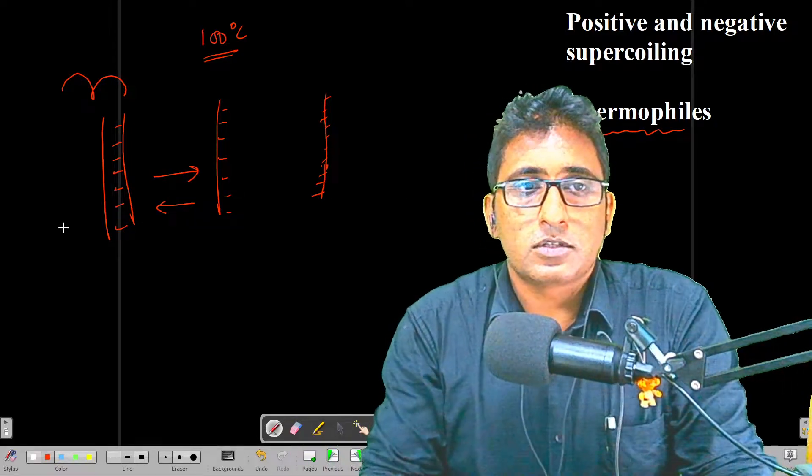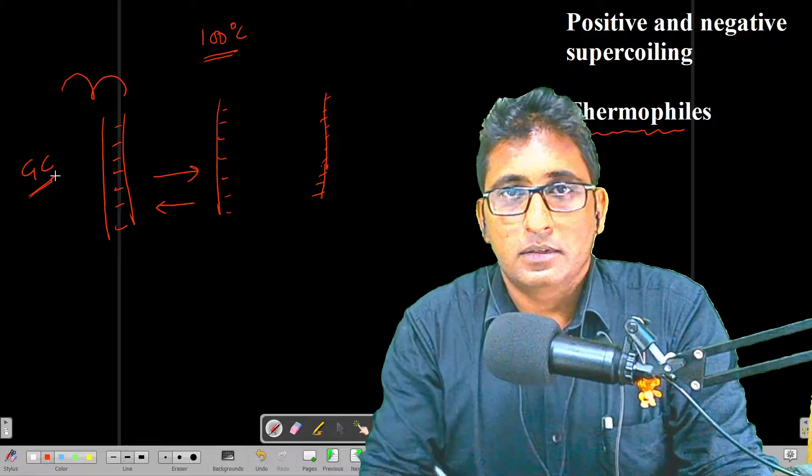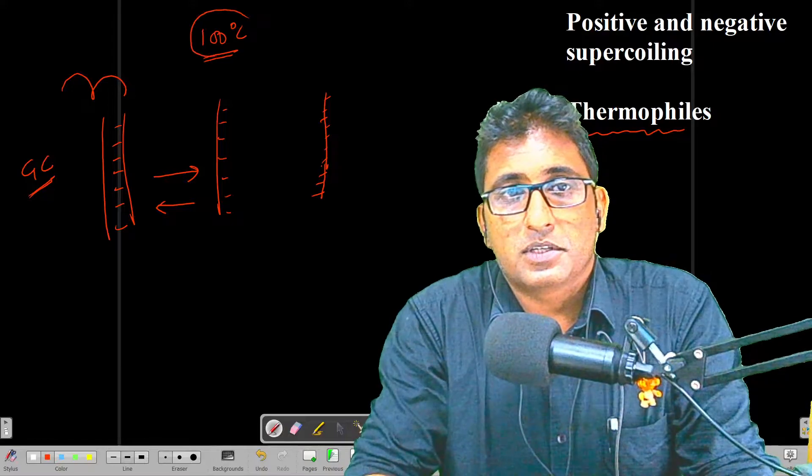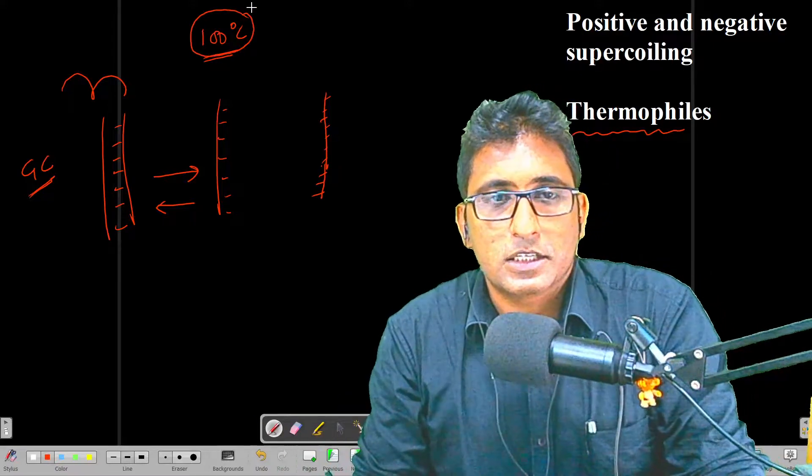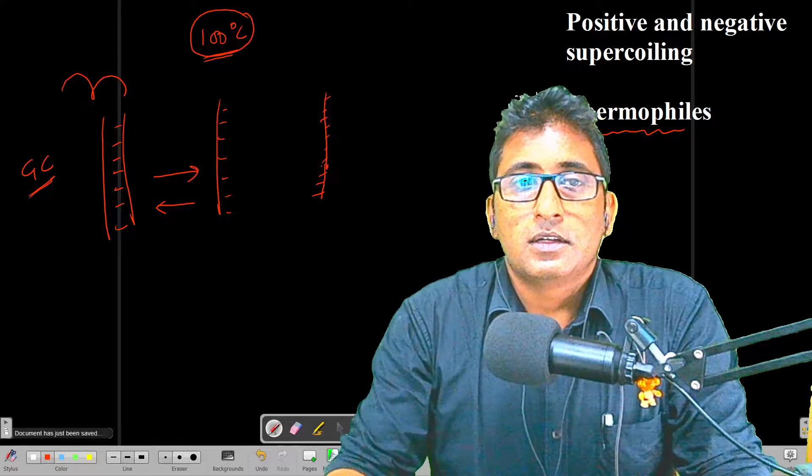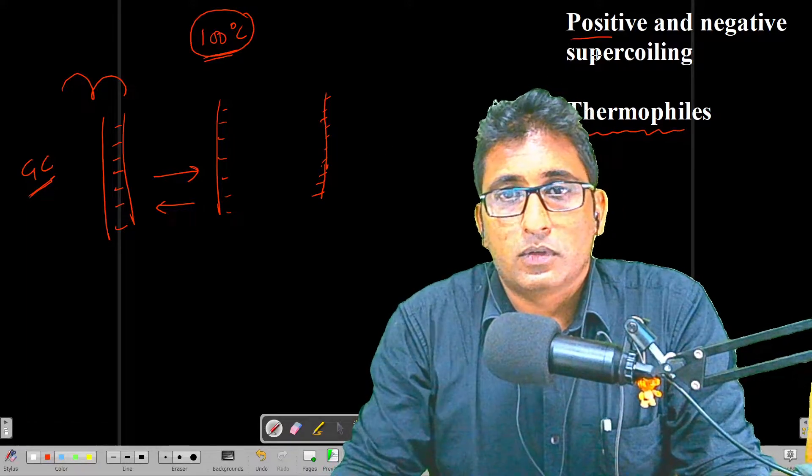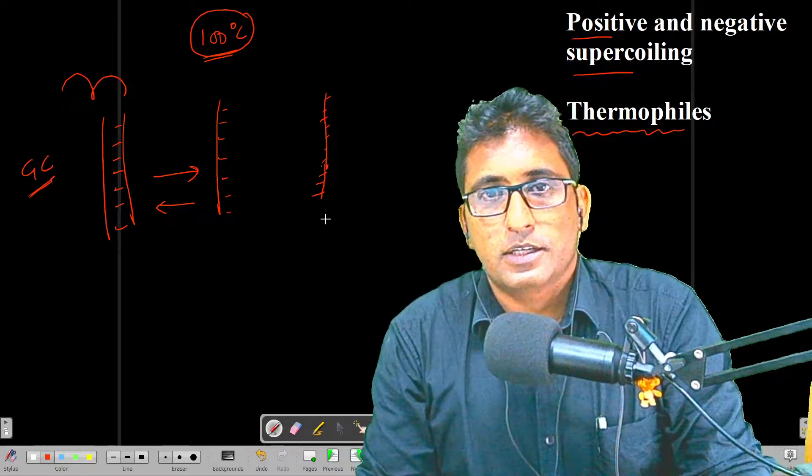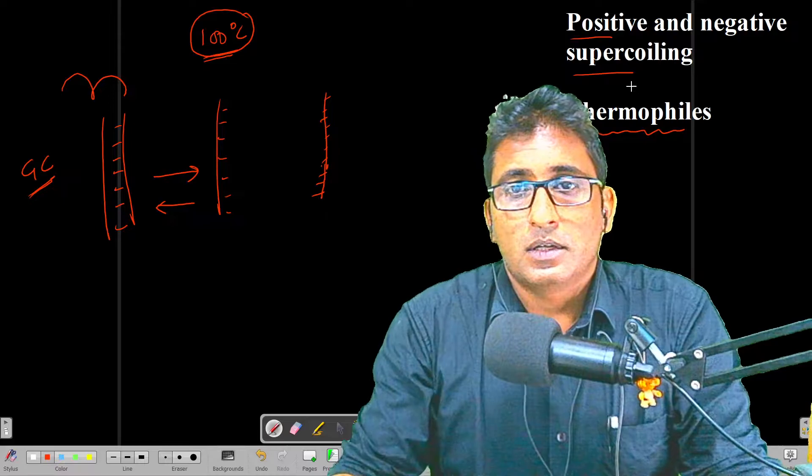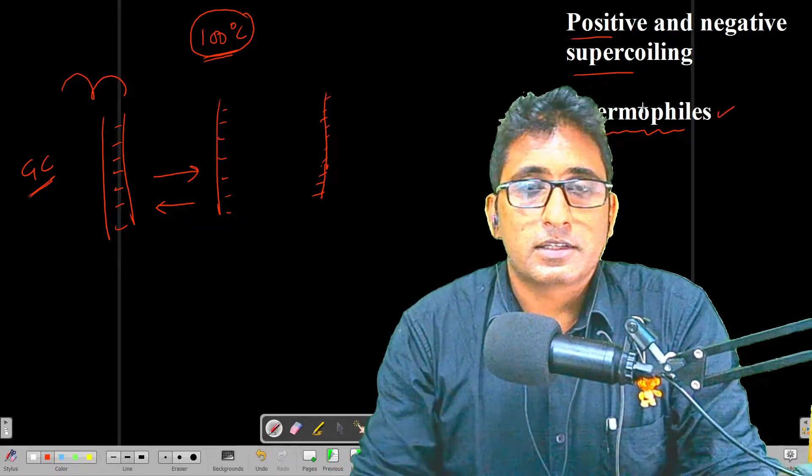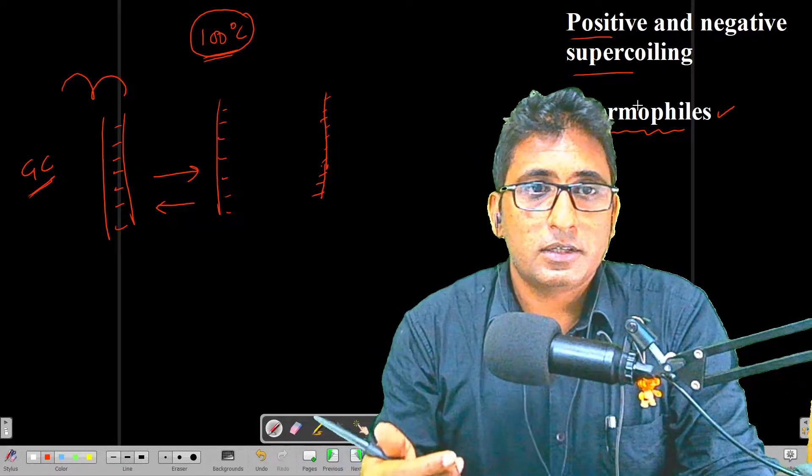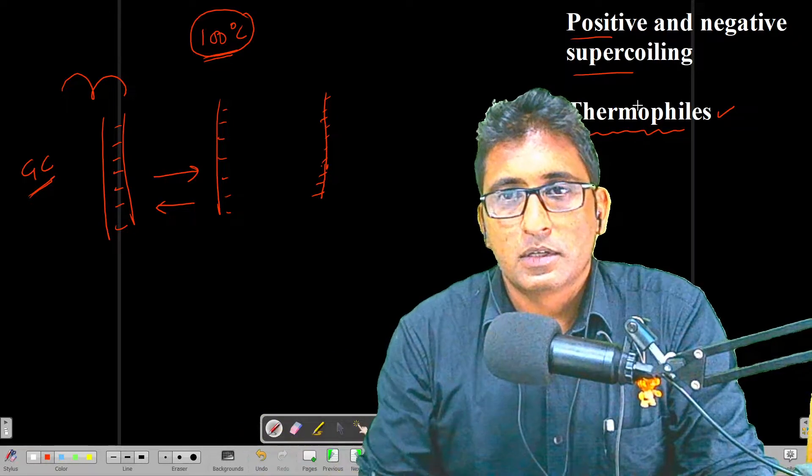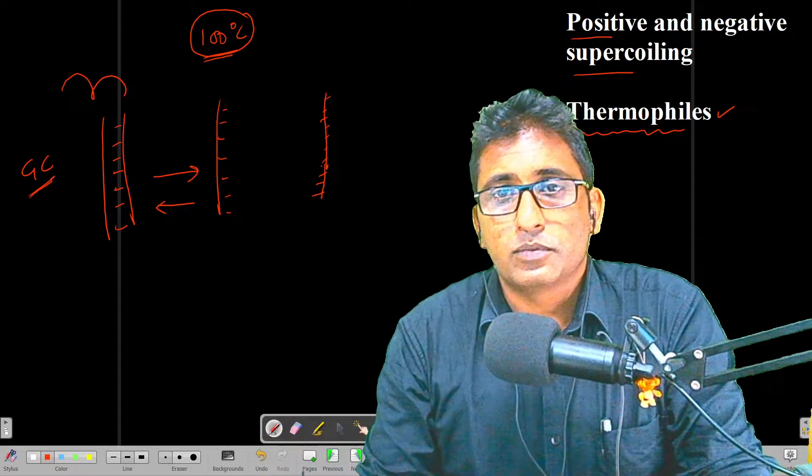So there should be some mechanisms to ensure that this DNA do not denature and remains as double-stranded DNA. One way, of course, is to increase the amount of GC content—that is visible—but it is also insufficient, especially in temperatures that are ranging about 100 degrees centigrade. In those cases, positive supercoiling is very useful to keep the genome in a double-stranded state. This is what has been the reason why thermophiles have high GC content and also the positive supercoiling of the genome. But otherwise, majority of the other genomes we would find it is negative supercoiled or relaxed state.